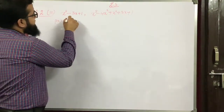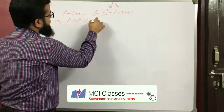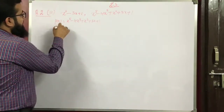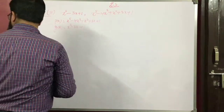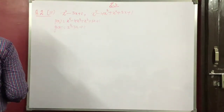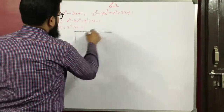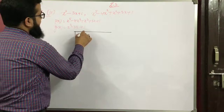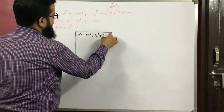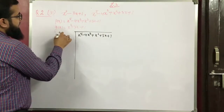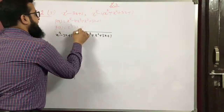Third problem: p(x) = x⁵ minus 4x³ plus x² plus 3x plus 1 and g(x) = x³ minus 3x plus 1. Dividing p(x) by g(x), we write x⁵ minus 4x³ plus x² plus 3x plus 1 inside and x³ minus 3x plus 1 outside.